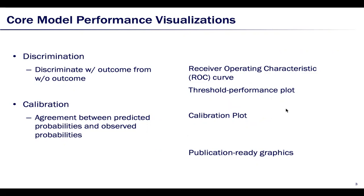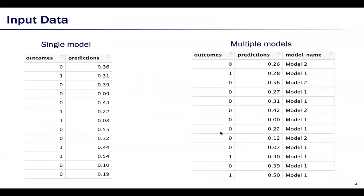All plots drawn by Runway are publication-ready graphics. To use Runway, users are only asked to provide their model predictions and the true outcomes. It can either be output from a single model or predictions by multiple models.